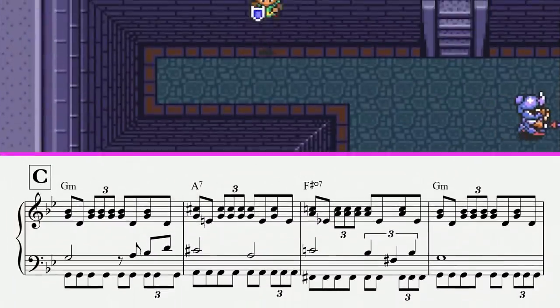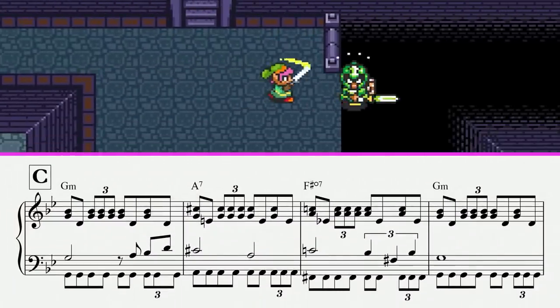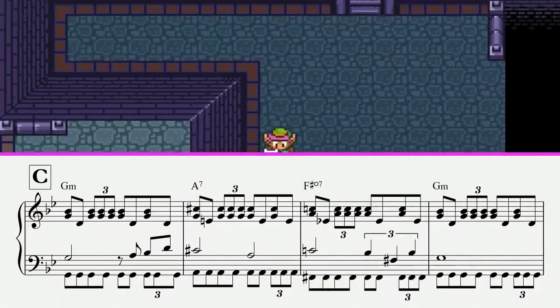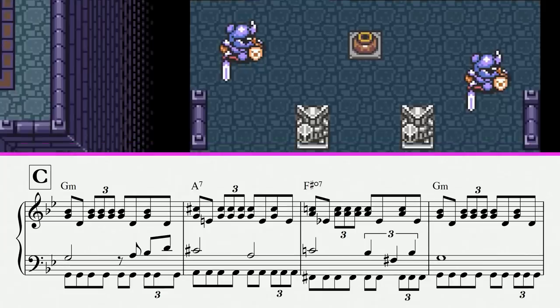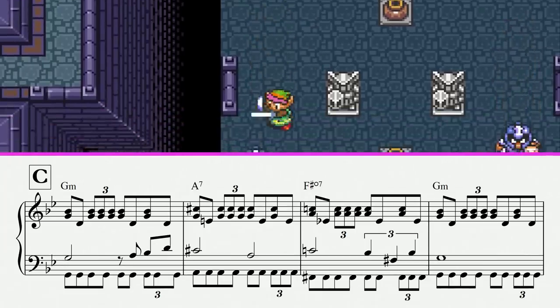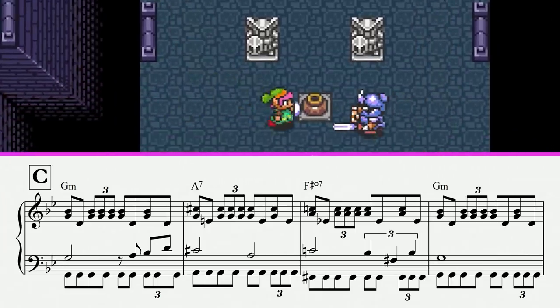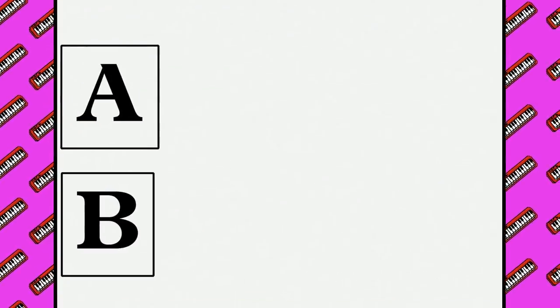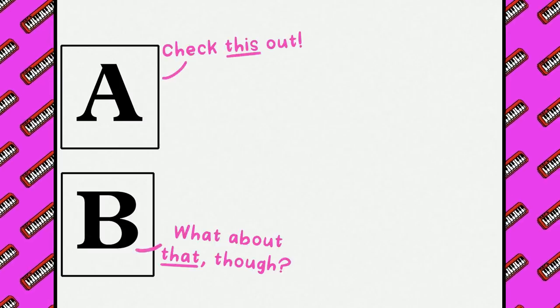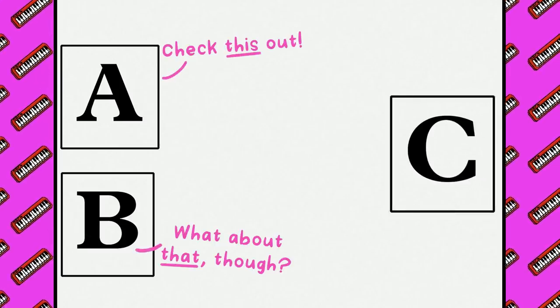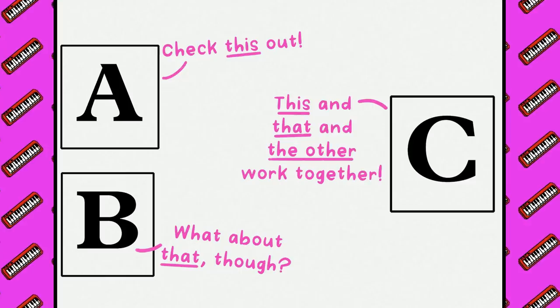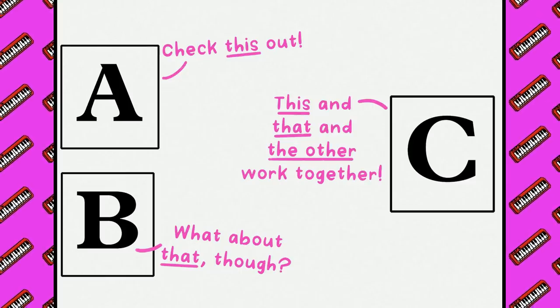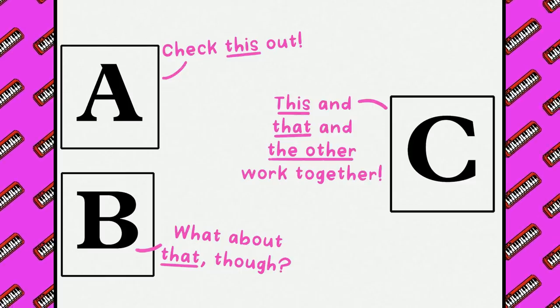But it's not over yet. After the B section, we get a C section. This is unusual for this era of game music where most pieces use just two looping sections, but like everything else in this tune, this third section was put here for a purpose. If the purpose of B sections in music, in general and in this example, are to contrast the ideas of the A section, then this C section's purpose is to flesh out and tie together all of the ideas we've been presented with so far in a big climactic finish.